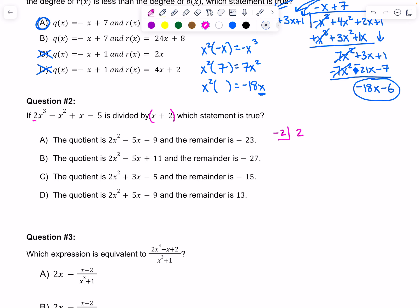We have 2 is our first coefficient, negative 1, a 1, and a negative 5. Remember, we always make sure we have every power. We had a 3, a 2, a 1, so we're not missing anything. Bring down the 2. 2 times negative 2 is negative 4. Negative 1 plus negative 4 is negative 5. Negative 5 times negative 2 is 10. 1 plus 10 is 11. 11 times negative 2 is negative 22.